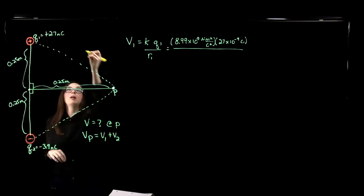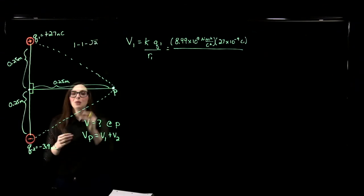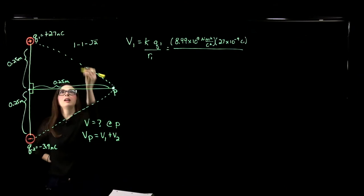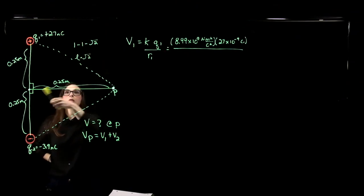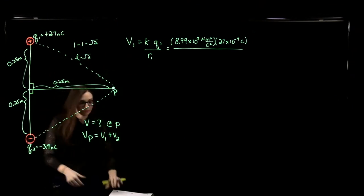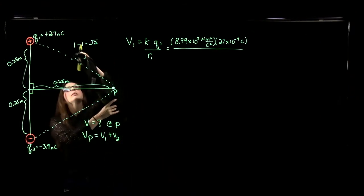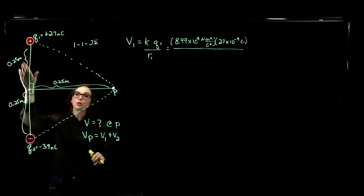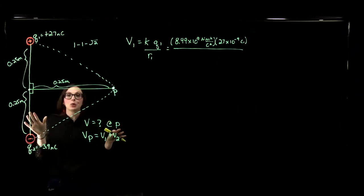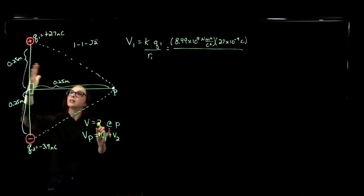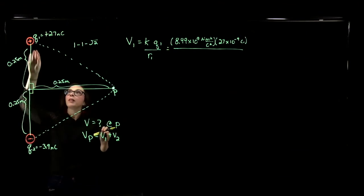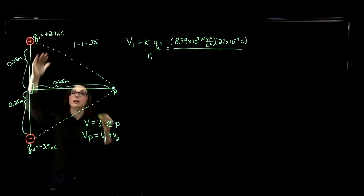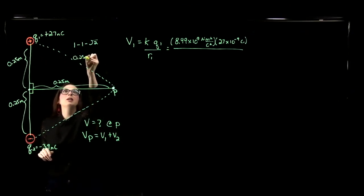Both legs of my triangle are the same length. This is what we call a 1-1-√2 triangle, where you've got two legs of the same length. The hypotenuse will be that leg length times the square root of 2. So the hypotenuse here will be equal to 0.25 meters times the square root of 2.